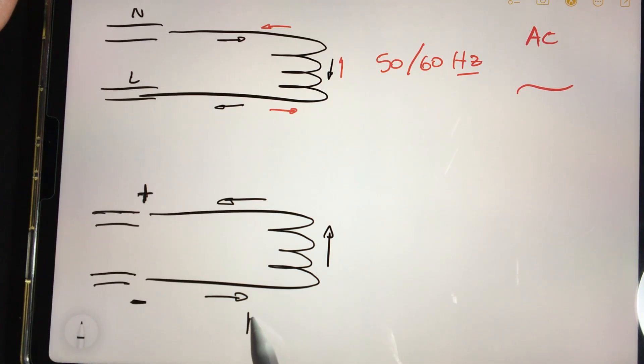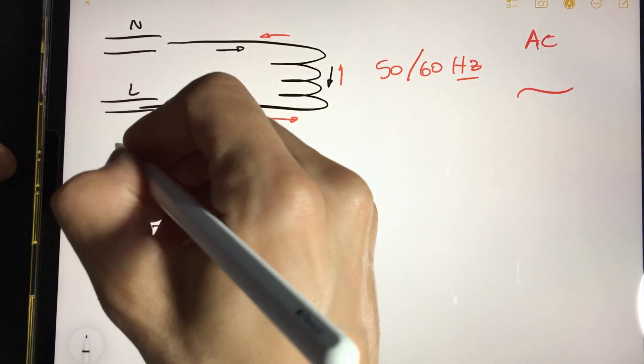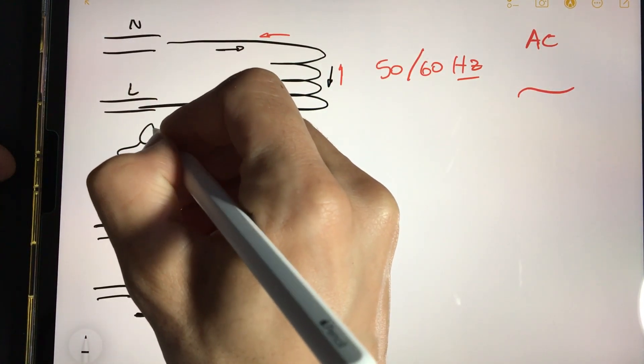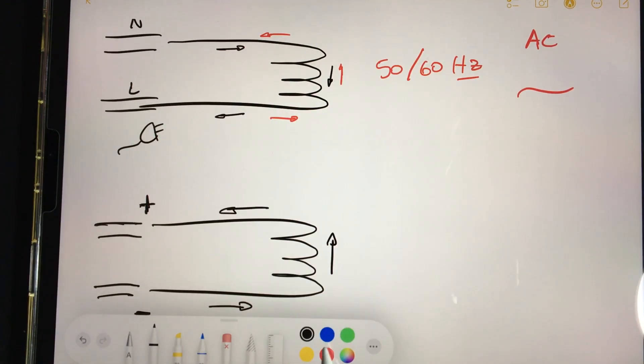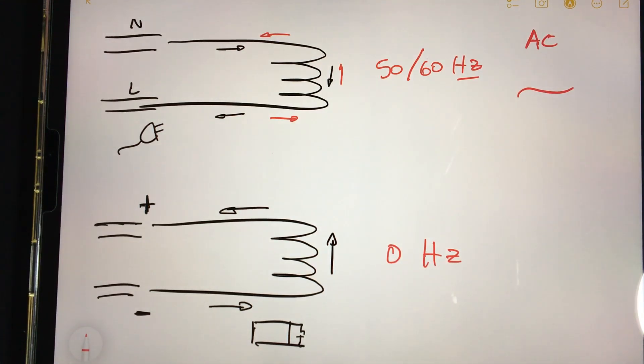A clear example of direct current is a battery. A battery represents direct current, while the electricity we have in our homes represents alternating current. Direct current naturally has no frequency, so that its frequency is zero.